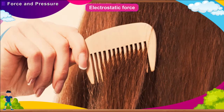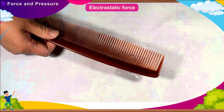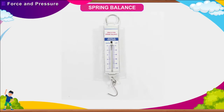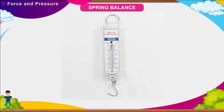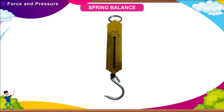Electrostatic force: after combing your hair, when you bring the comb close to bits of paper, they are attracted towards it. This force is an example of non-contact force termed electrostatic force. Spring balance is a device that measures force. It uses the principle that the greater the force, the greater is the extension it produces on a coiled spring. It consists of a coiled spring with a pointer attached to it. As the spring is stretched, the pointer moves on a graduated scale, and the reading gives the magnitude of the force.